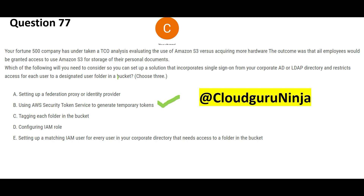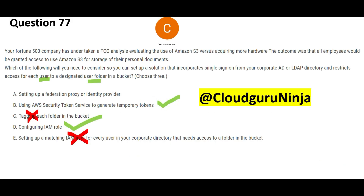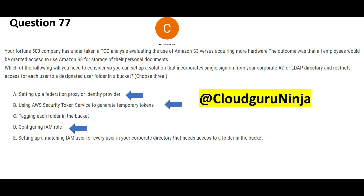Now, other keywords: they are saying each user will be given access based on user to a folder in a bucket — meaning not everybody has access, only certain users. Best practice: whenever you want to control this kind of access, you use a role, not individual users. So you need to configure an IAM role and not an IAM user. Why do we tag resources? For organizing resources — but we don't need to organize resources here, so C is wrong. We're left with one more: identity provider — because the question says you need to set up AD, so you need an identity provider.